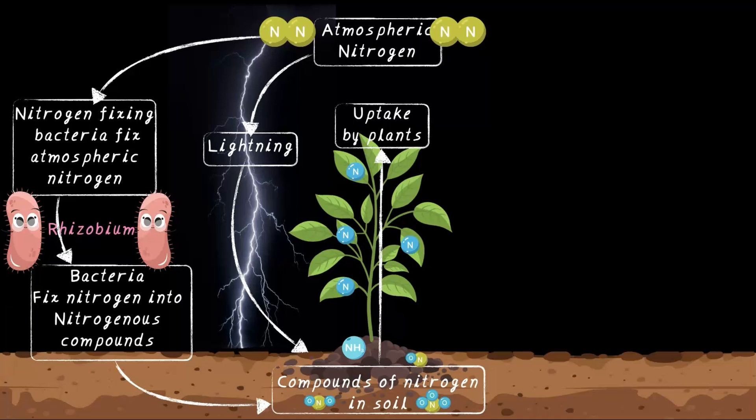That's where herbivores come along and munch on these plants. Just like that, the nitrogen has now moved into the animals.